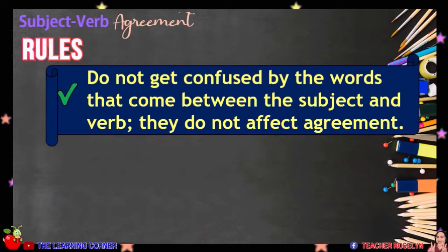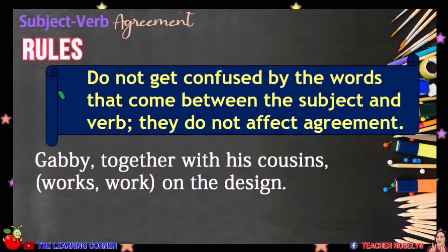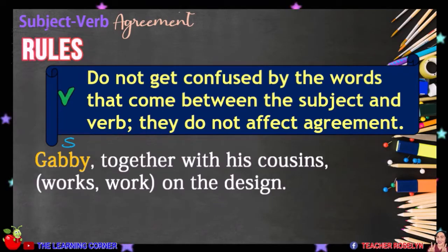Do not get confused by the words that come between the subject and verb — they do not affect agreement. For example, in this sentence, the subject is GABBY, which is singular. The phrase 'together with his cousins' does not affect the singular subject, so we will use the verb WORKS. Gabby, together with his cousins, works on the design.